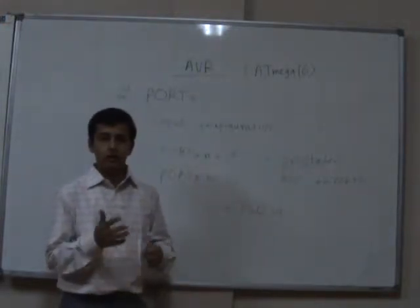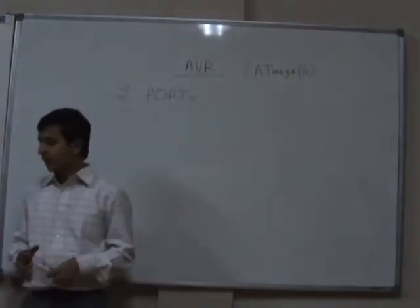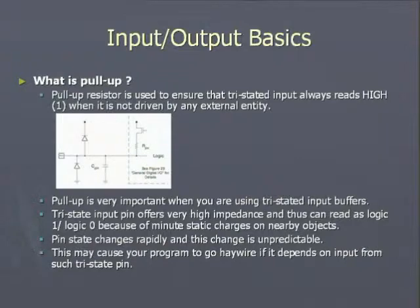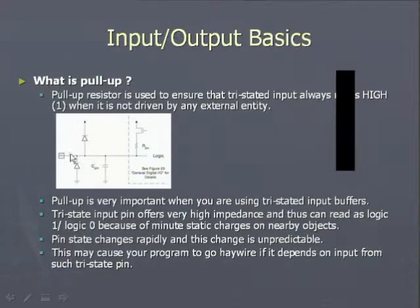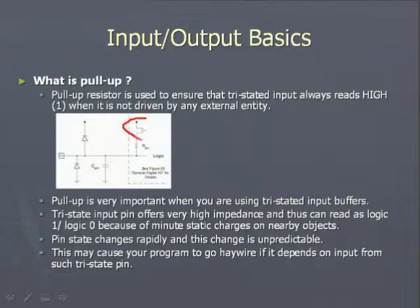Unless you are using an analog-to-digital converter or a tri-stated input is specifically required, use pull-up. A pull-up resistor ensures that a tri-stated input always reads high when not driven by any external entity. A tri-stated input pin offers very high impedance and can read as logic 1 or logic 0 due to minor static charges on nearby objects, causing the pin state to change very rapidly and affecting program execution. In the case of the 8051, some ports do not have pull-up resistors and require external ones, but since all ports on AVR have internal pull-ups, you can enable them whenever using those ports for input.